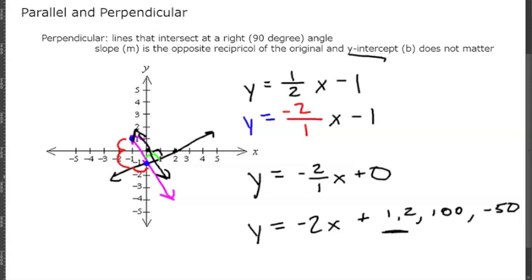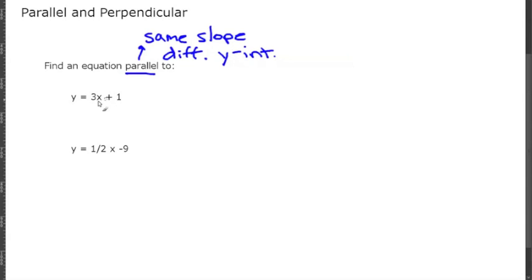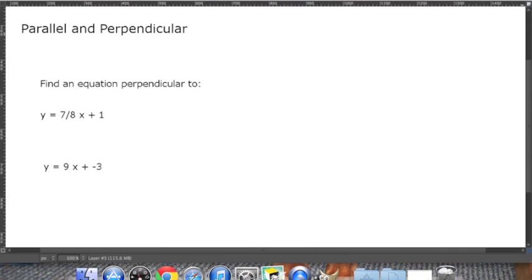Let's do a few examples. This first one asks us to find an equation parallel to y equals 3x plus 1. Remember, if a line is parallel it's going to have the same slope but a different y-intercept, so an example would be y equals 3x plus 5. For the next one, a parallel line to y equals 1/2 x minus 9 would be y equals 1/2 x plus 2.